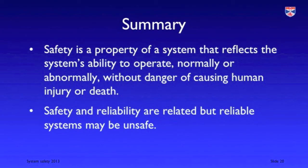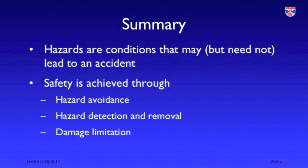In summary, safety is a property that reflects a system's ability to operate without causing injury or damage to its environment. Safety and reliability are closely related, and achieving reliability is a necessary but not sufficient condition for achieving safety — it's possible for systems to be reliable but unsafe, primarily because of specification errors and misunderstandings. Hazards are conditions that may lead to an accident, though not necessarily so. We achieve safety through hazard avoidance, hazard detection and elimination, and damage limitation. You can download the slides that accompany this video from my SlideShare account.